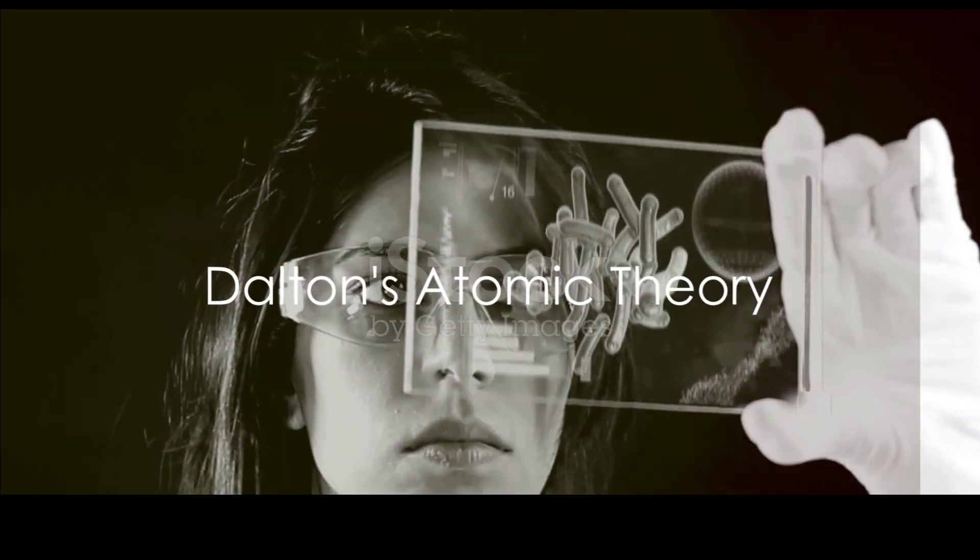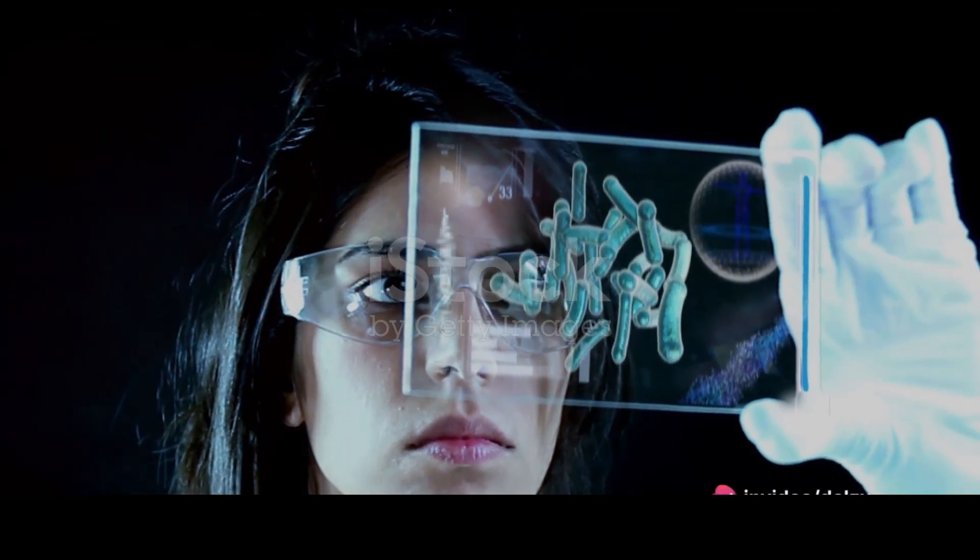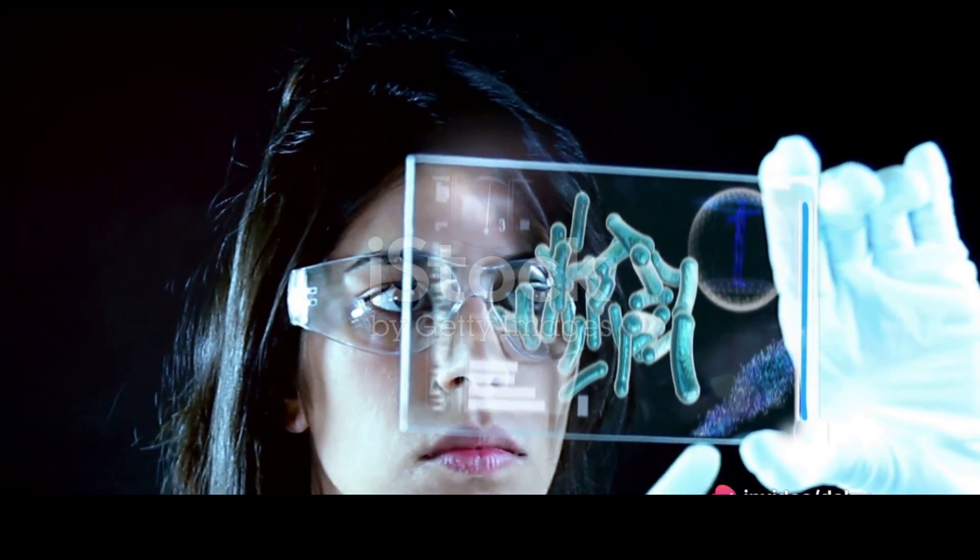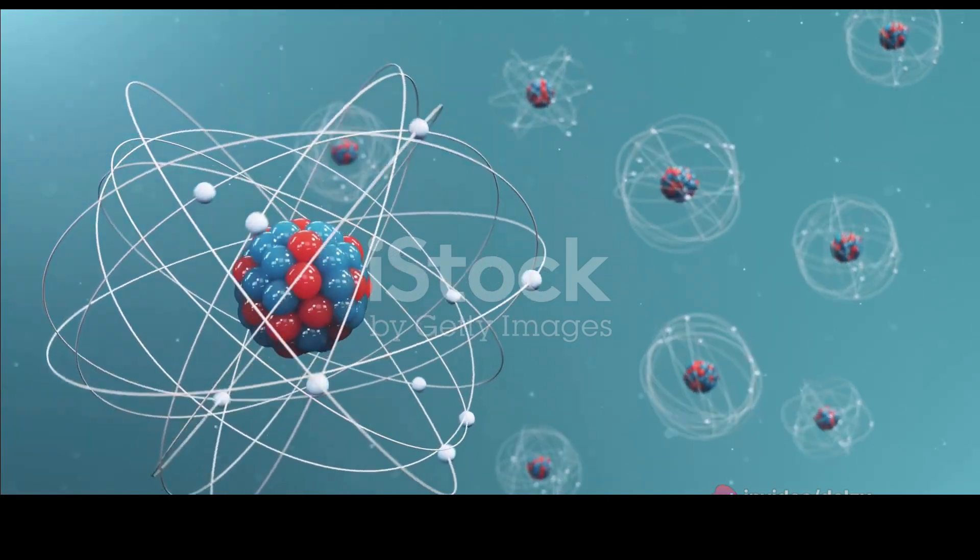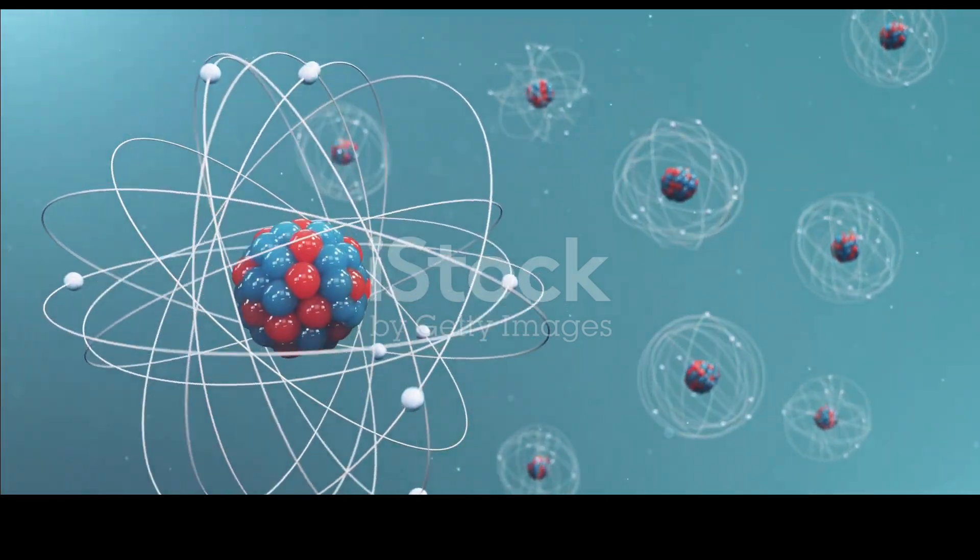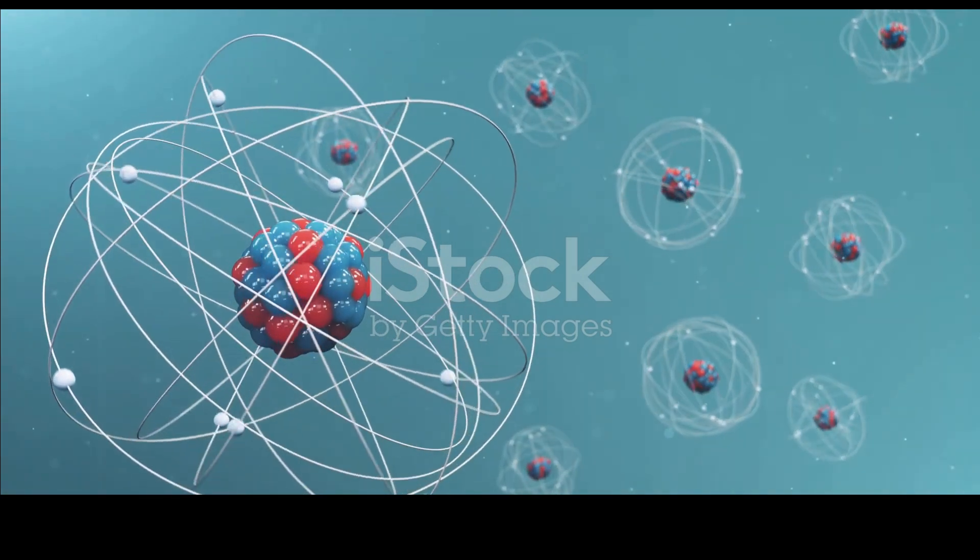Fast forward to the early 19th century, when English chemist John Dalton further developed the atomic theory. He proposed that each element consists of atoms of a single, unique type, and that these atoms can join together to form chemical compounds.